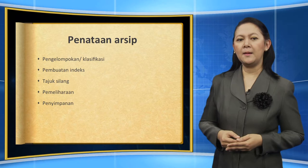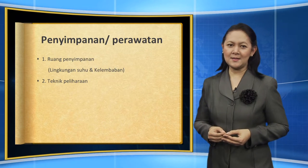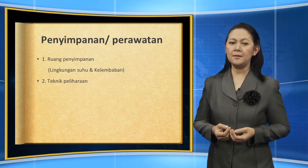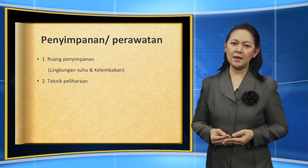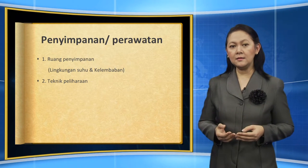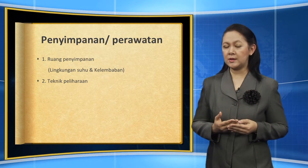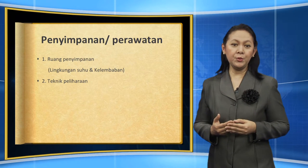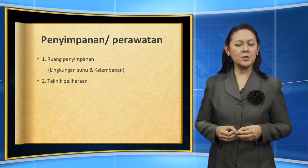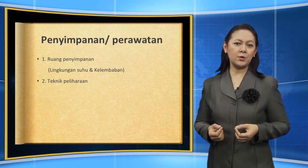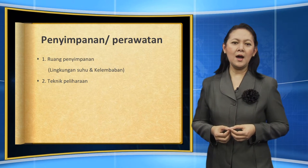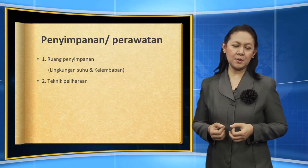Berikut ini kita akan lihat bagaimana penyimpanan atau perawatan dari jenis-jenis arsip tersebut. Satu, ruang penyimpanan — yang harus kita perhatikan dalam ruang penyimpanan adalah lingkungan, suhu, dan kelembapan. Foto memiliki standar ukuran berbeda dengan video, begitu juga dengan mikrofis. Sehingga terkadang penyimpanan arsip-arsip ataupun rekod-rekod audiovisual tersebut tidak bisa disimpan dalam satu tempat dan bersamaan, karena suhu mempengaruhi kekuatan dari penyimpanan alat tersebut. Kemudian teknik pemeliharaan yang harus diperhatikan adalah pengecekan setiap jenis rekod audiovisual pada waktu-waktu tertentu; ada jadwal-jadwal tertentu rekod ataupun arsip tersebut kita cek.